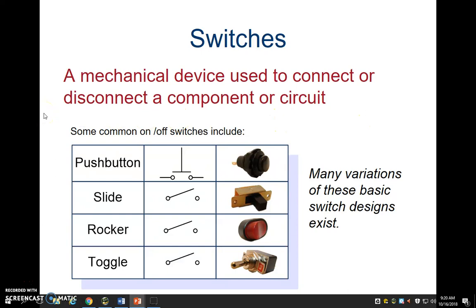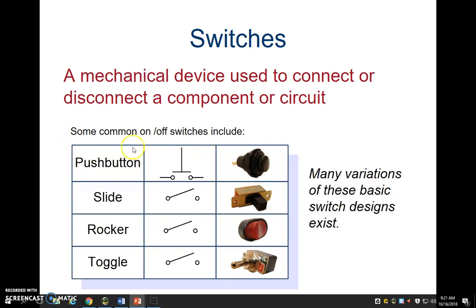Now we've got a couple of things underneath. We don't have to draw the symbol for all switch types because the rocker, toggle, and slide switches all have the exact same symbol. The push button is a little different. Since we only use two of these in our kits, we want to get the name and symbol for the push button switch and the slide switch — go ahead and write those down now.